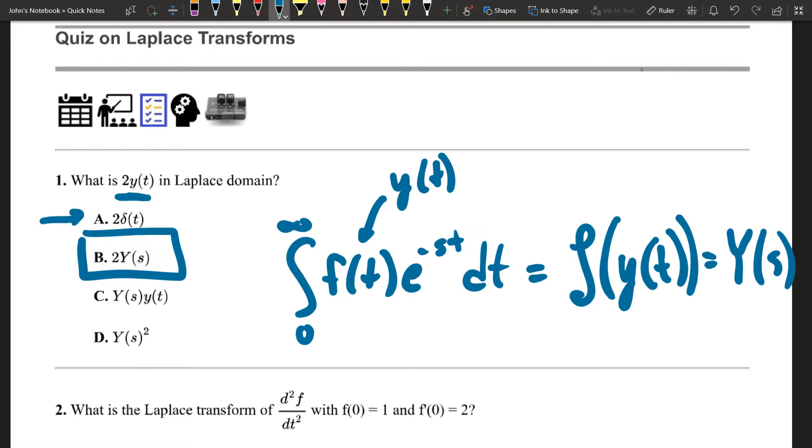This would be an impulse response. This is not correct. There's no nonlinear functions in the Laplace domain, so we wouldn't have y squared either. None of these are correct. The correct answer is just 2 times y of s.